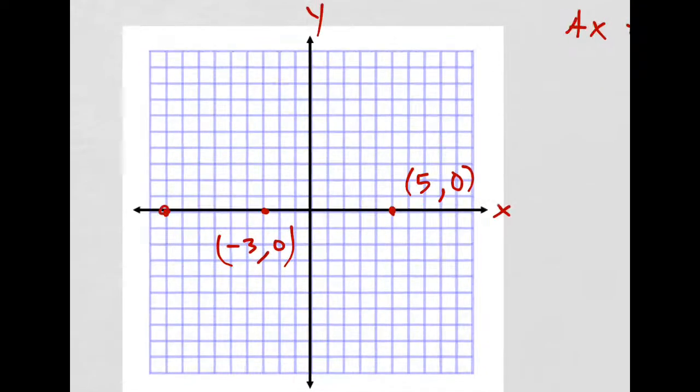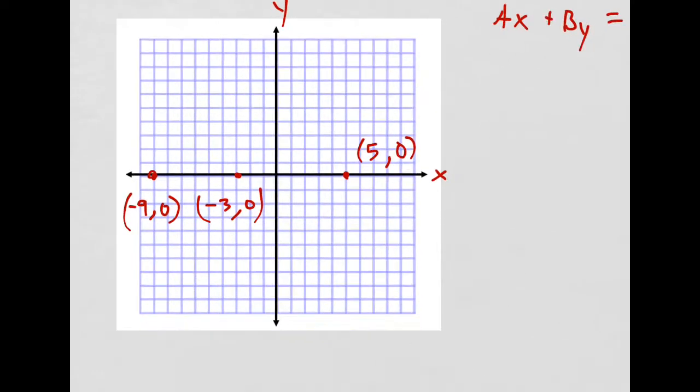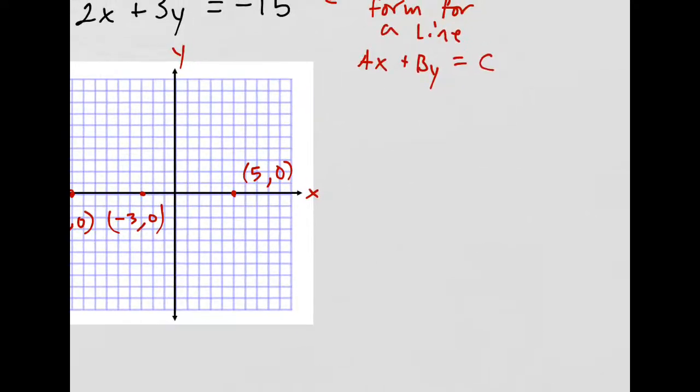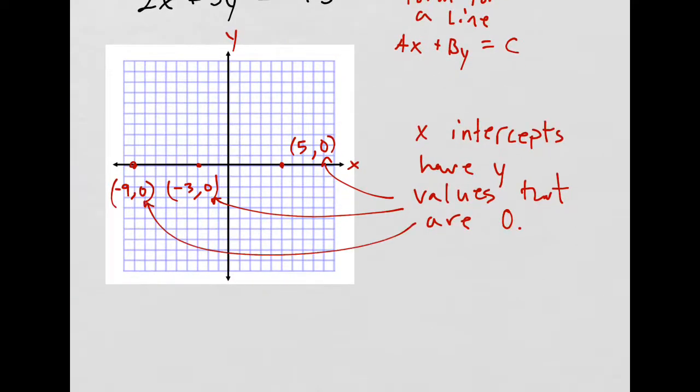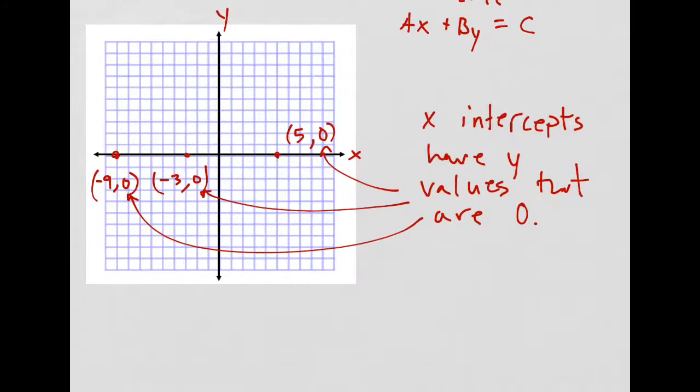What about this one? That's negative 9, comma, 0. I don't move up or down at all. In fact, if I have an X-intercept, for X-intercepts, the Y-values are 0 every single time. If you're on the X-axis, your Y-value is 0.